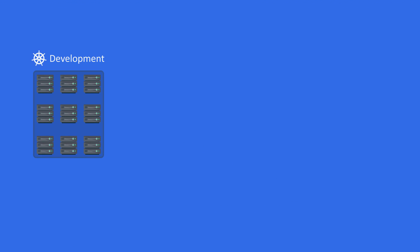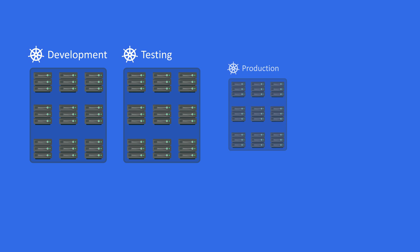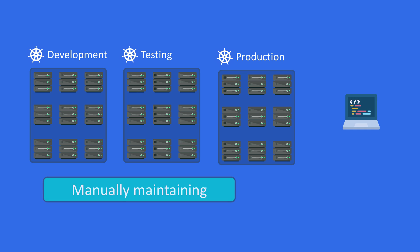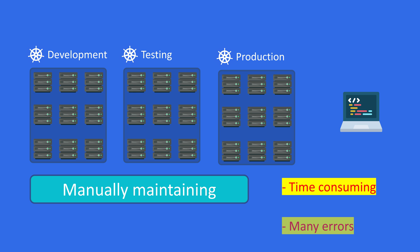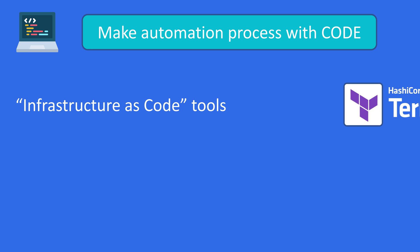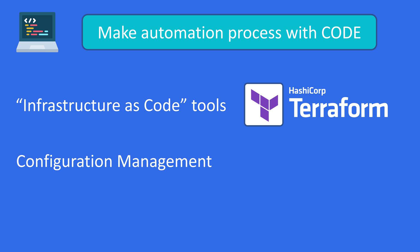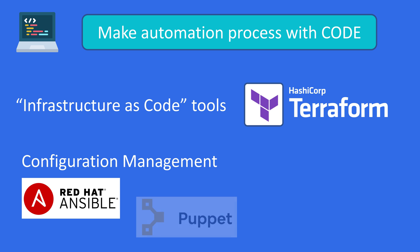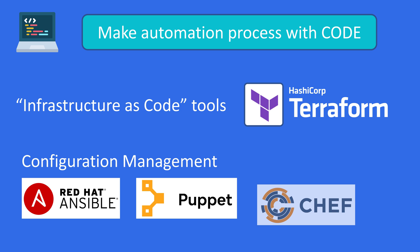Now let's talk about Infrastructure as Code. You have your application in development and want to deploy it to a production environment, but you may have more than one environment. This process takes time and may introduce errors. The solution is to automate it by writing code. There are two main steps: Step 1 is to create infrastructure using tools like Terraform — an infrastructure provisioning tool. Step 2 is to configure, run, and deploy your application in the production environment using tools like Ansible, Puppet, or Chef — though you should only need to know one of these.